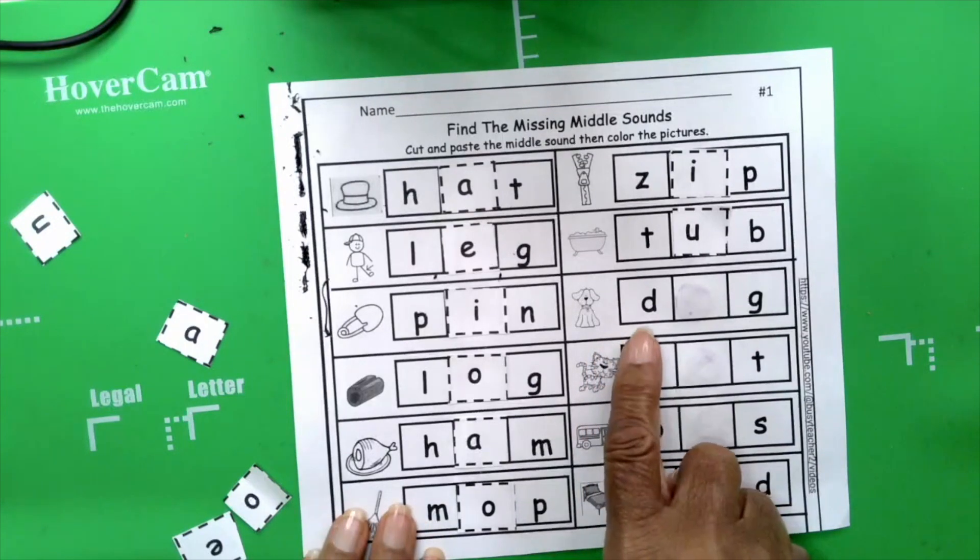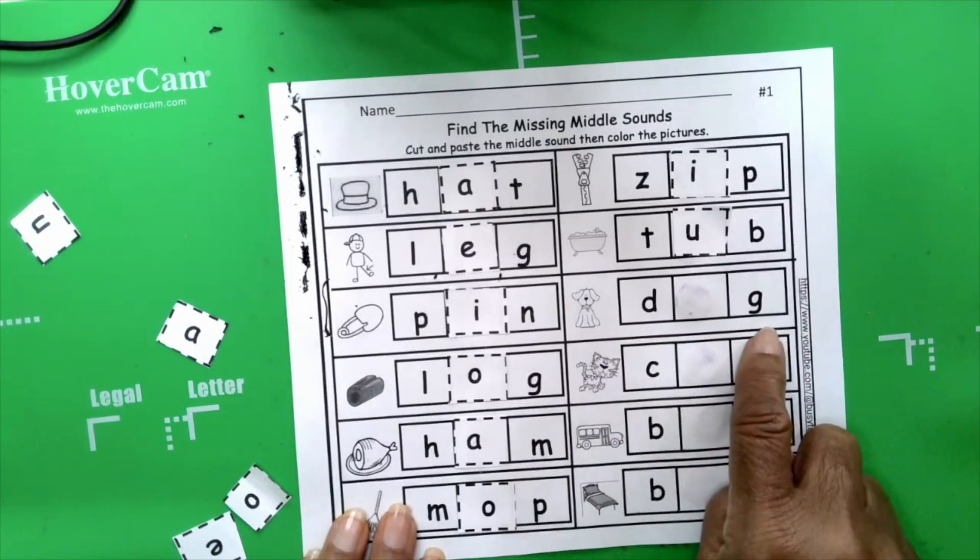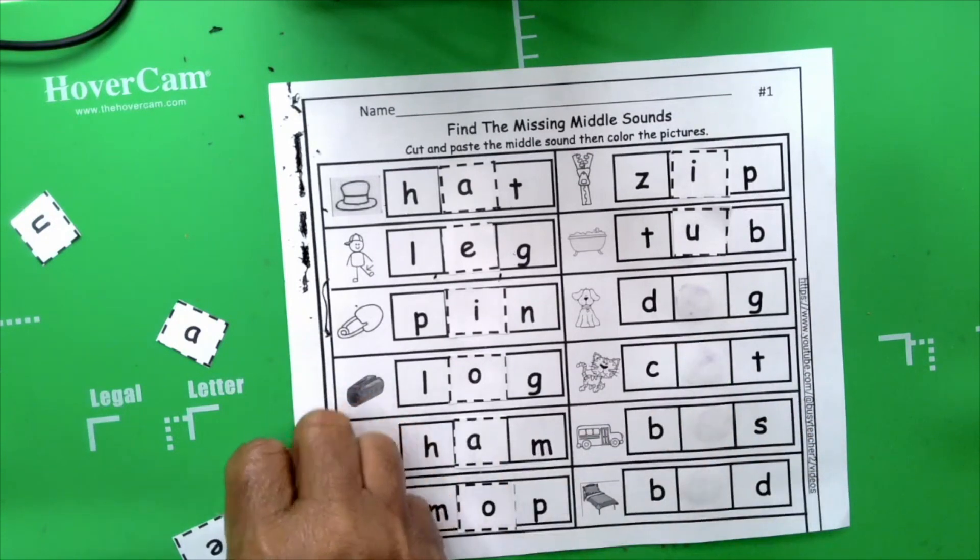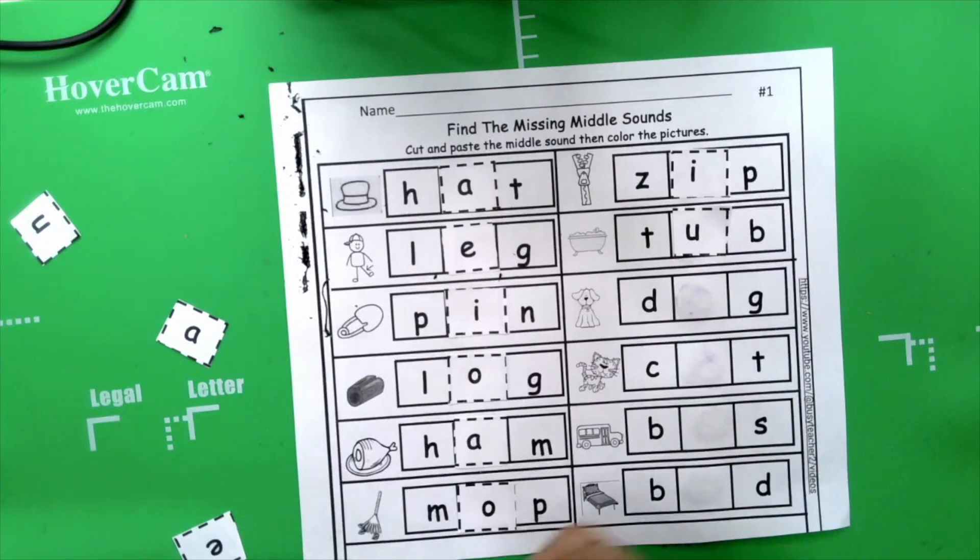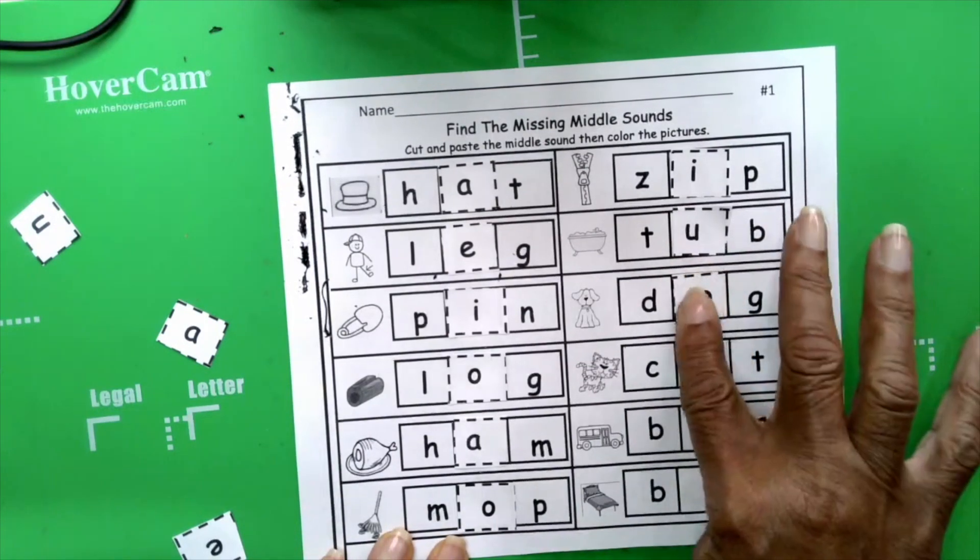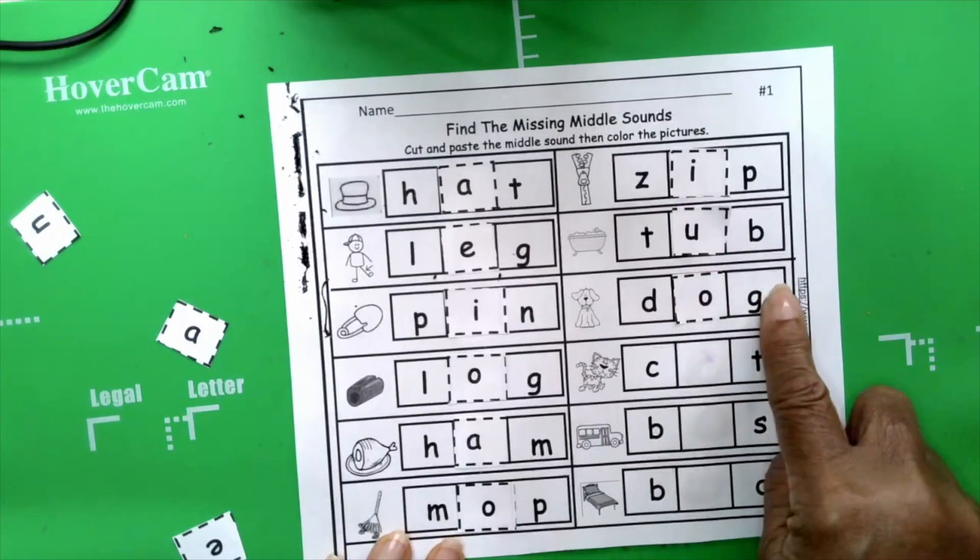Dog, d, ah, g, dog, ah, what makes the sound ah, oh, exactly, oh, dog, d, o, g, dog.